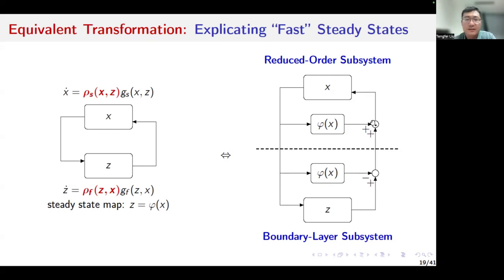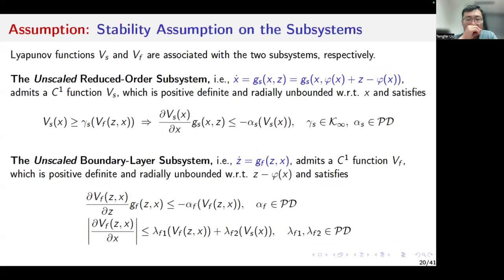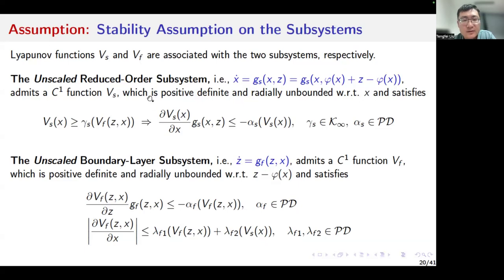It is easy in accordance with the basic idea of singular perturbation: we make stability assumptions on the reduced order subsystem and the boundary layer subsystem. I directly use Lyapunov functions to characterize the stability properties. Vs corresponds to the slow subsystem, which corresponds to the reduced order subsystem. I assume that Vs is continuously differentiable, positive definite, and radially unbounded with respect to the state x, and satisfies an implication-based condition.